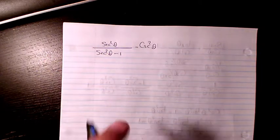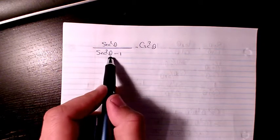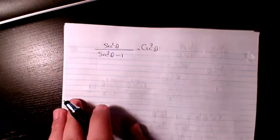In this video I have secant square theta divided by secant square theta minus 1, and I have cosecant square theta on the right hand side.